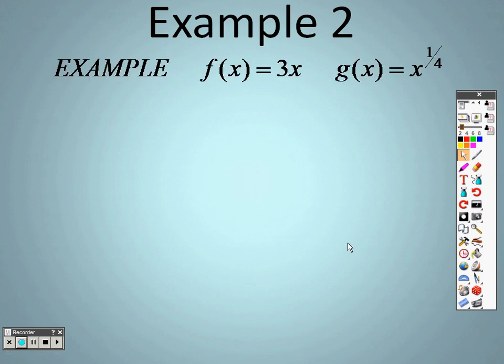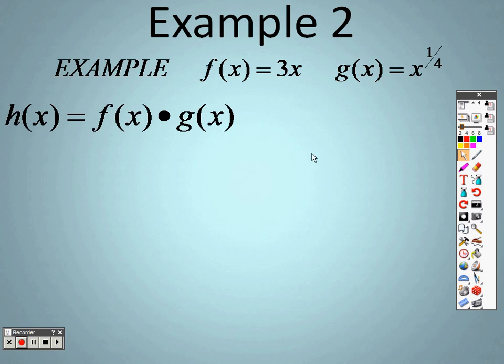With example 2 here, changing it up, f of x is 3x and g of x is x to the fourth. If I wanted you to multiply them, you plug this item in for f of x, you plug this item in for g of x. So I plug them in.